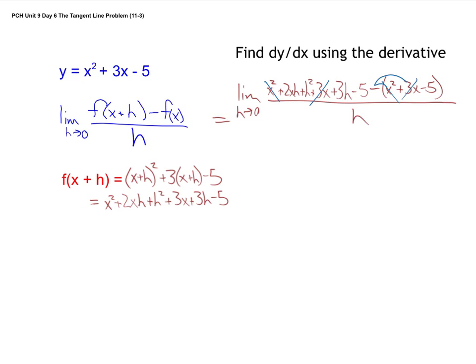You've got a minus 5 and minus a negative 5, so those cancel out to 0. And notice what's left is the limit as h approaches 0 of 2xh plus h squared plus 3h all over h. And notice the whole point of this, or the reason why this works. Remember we said this was an indeterminate form as h approaches 0.